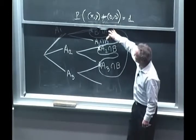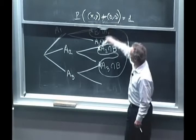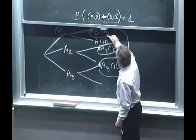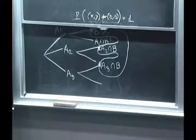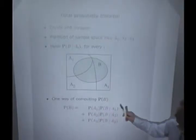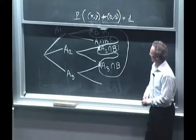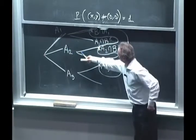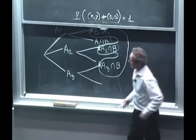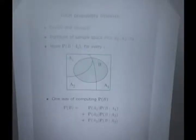For each one of those contingencies, we can calculate its probability by using the multiplication rule. So the probability of A1 and B happening is this. It's the probability of A1 and then B happening given that A1 happened. The probability of this contingency is found by taking the probability that A2 happens times the conditional probability of A2 given that B happened, and similarly for the third one.